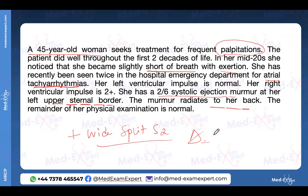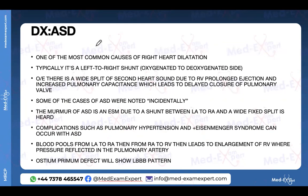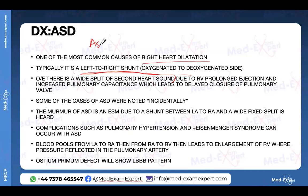Excellent — ASD! This is an Atrial Septal Defect. It is one of the most common causes of right heart dilatation. The second important point: ASD is typically a left-to-right shunt — oxygenated blood from the left atrium crosses to the right atrium. You will find a wide split second heart sound in the exam stem many times. Many ASD patients will be asymptomatic in their early years.